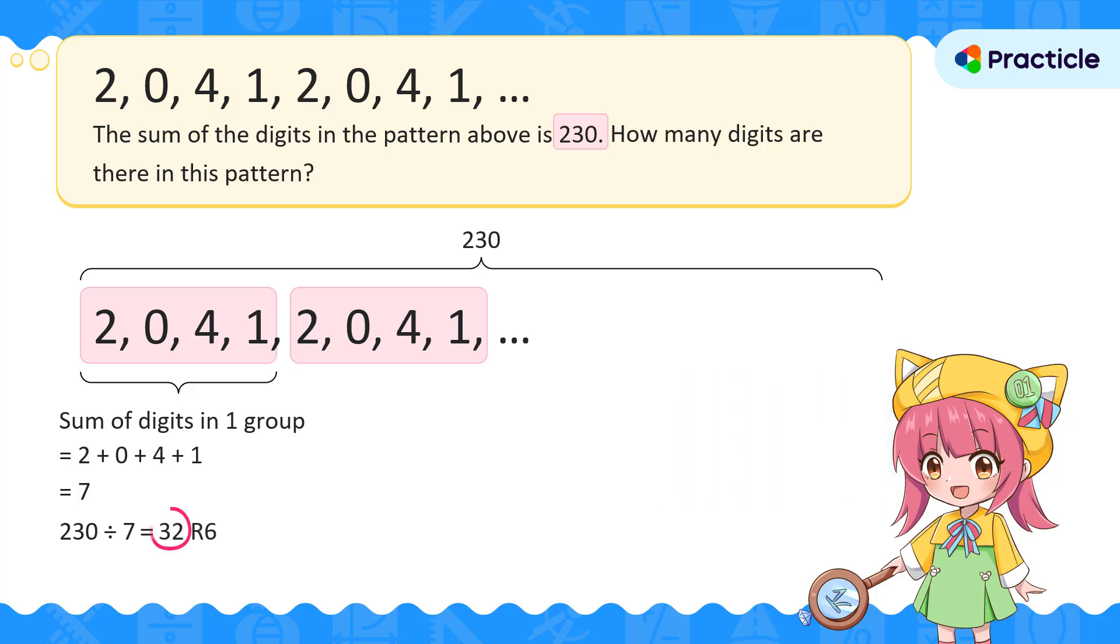32 means that we have 32 groups of 7. Remember that we need to find the number of digits in this pattern? Let's look at the number of digits in one group. How many digits are there in a group?